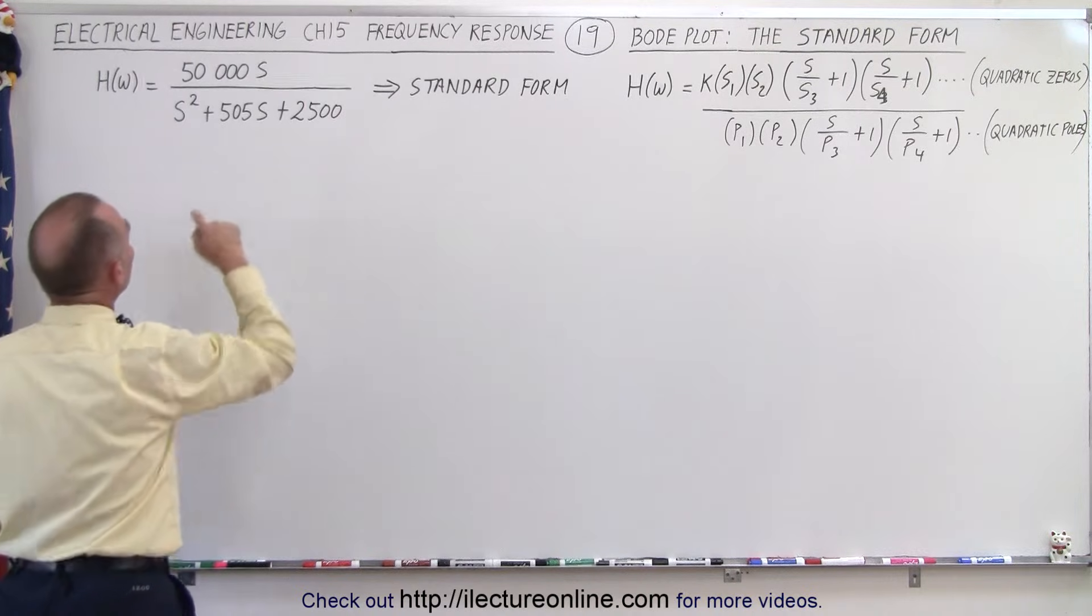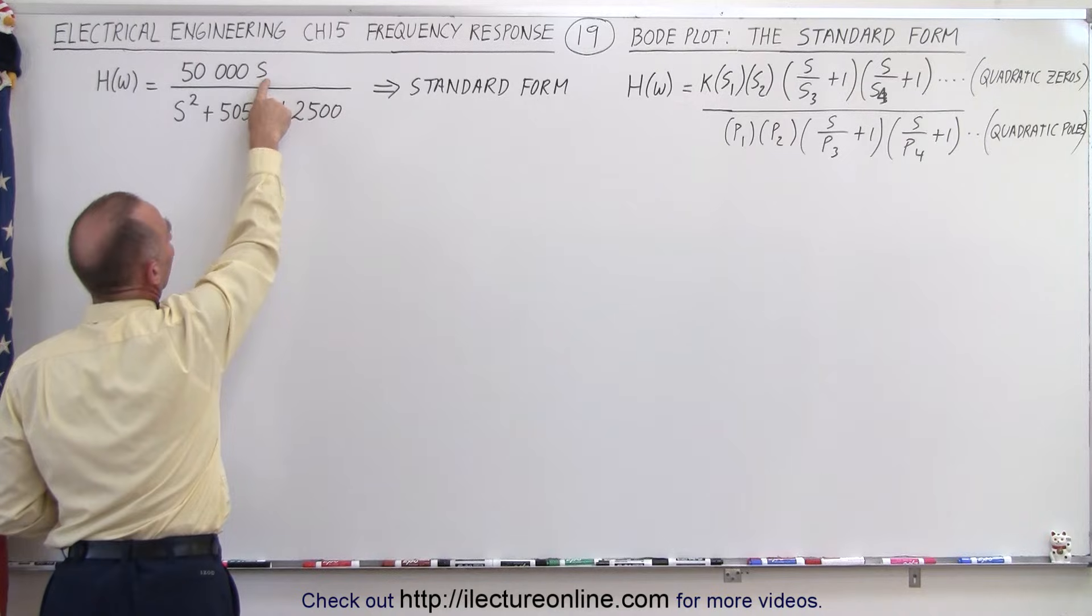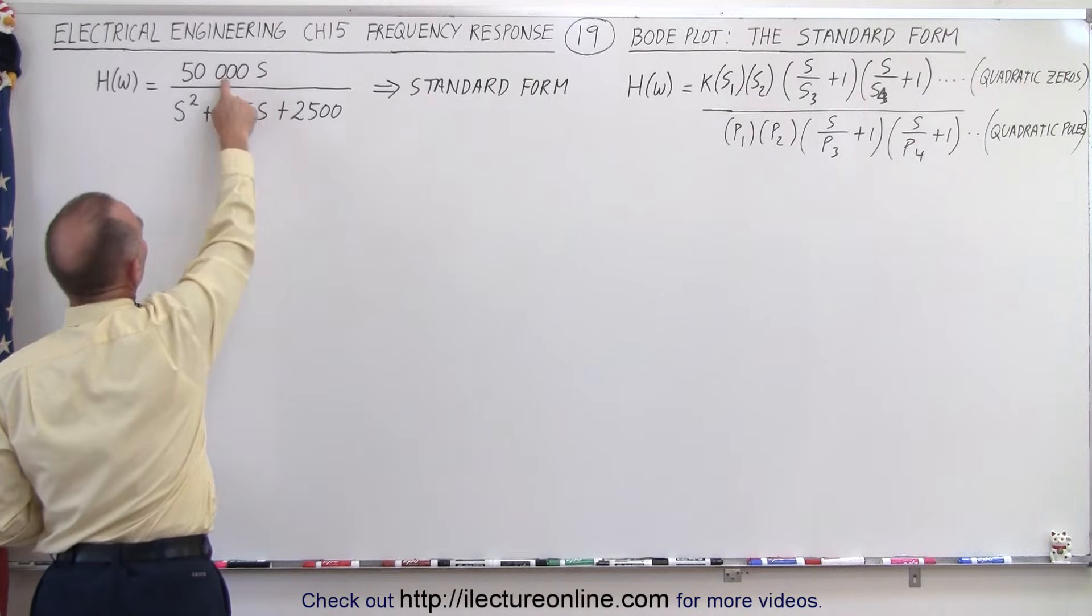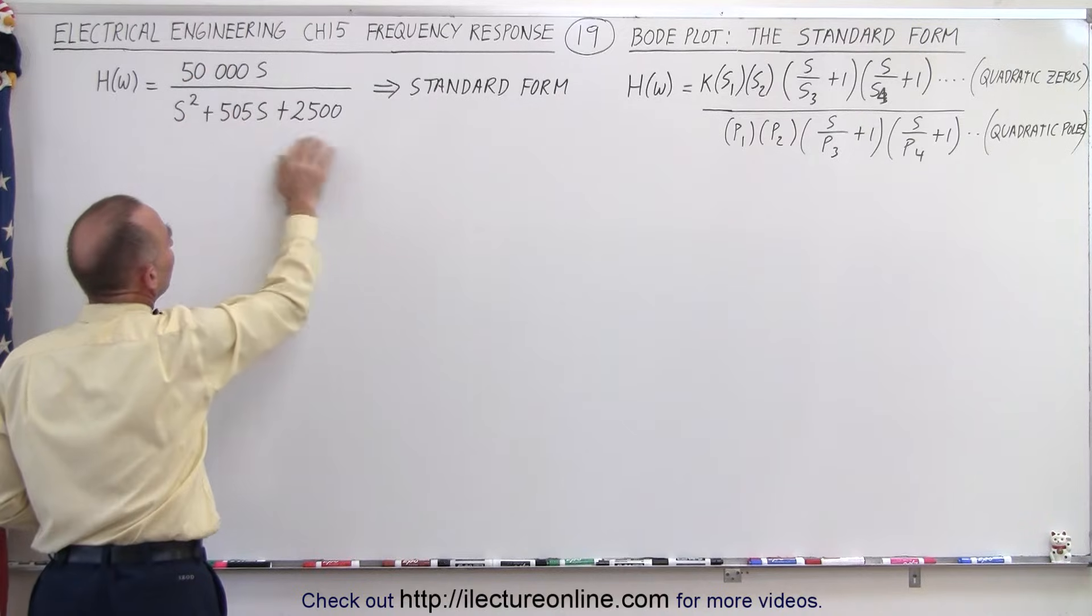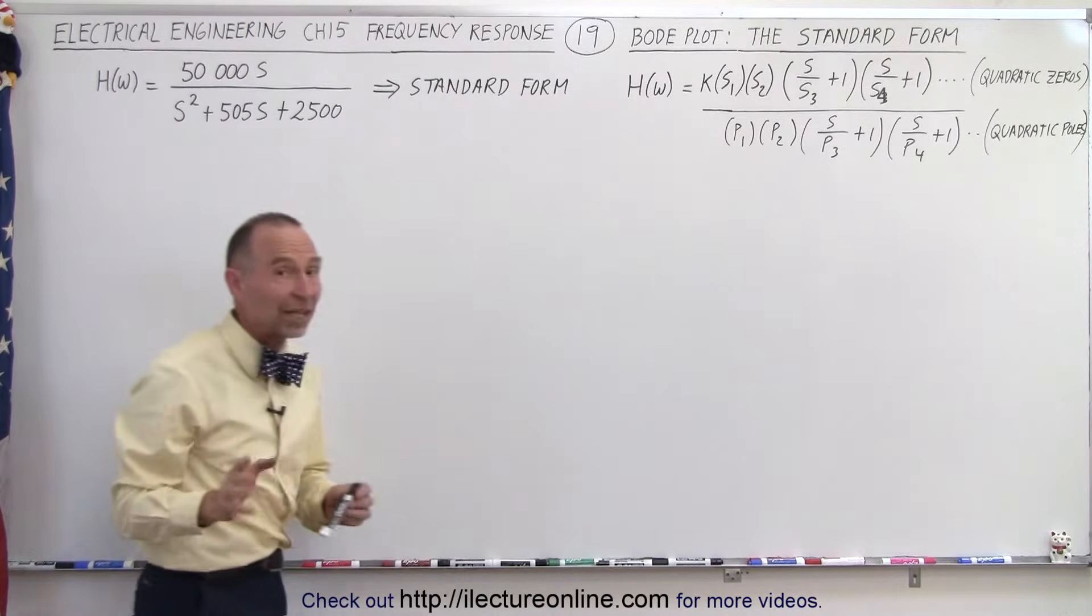Well first of all, notice that we do have a zero at the origin in the numerator. We have a constant, but that's not the value of the constant yet because we first need to manipulate the denominator to make it look like the standard form.